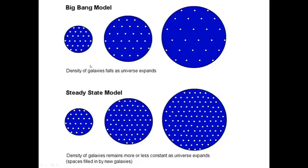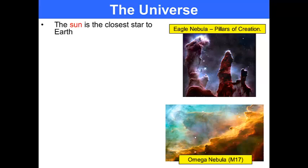In the Big Bang model, you have a high density of material in the original orientation and as the universe expands, the density becomes smaller. In the steady state model, as the universe expands, the density of matter in the universe remains the same. The space is filled by the formation of new galaxies.